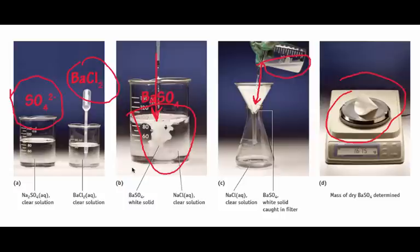Once that's dried, we'll weigh it on a milligram balance. And in this case, we see that the mass of the dry barium sulfate and the filter paper is 1.675 grams.